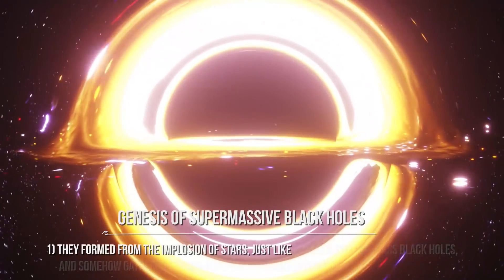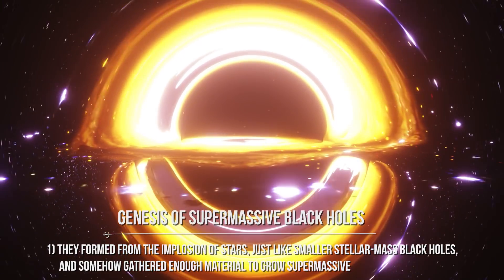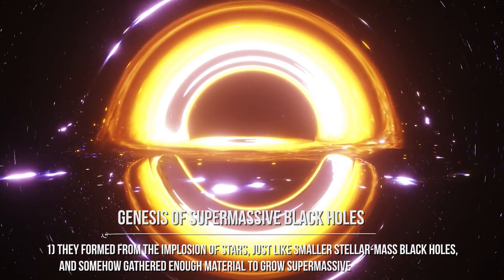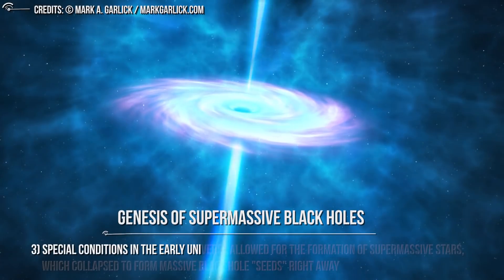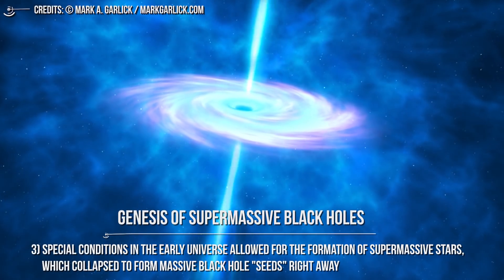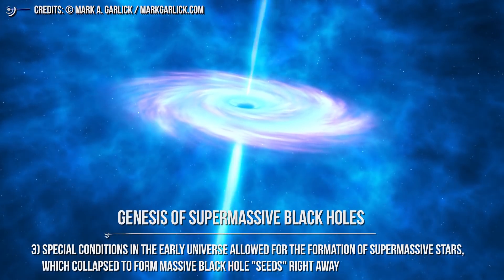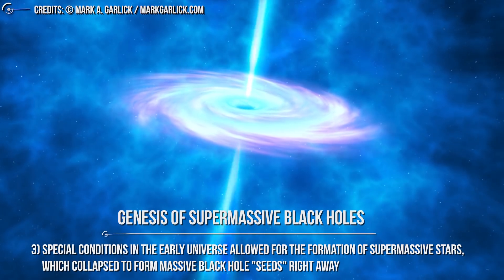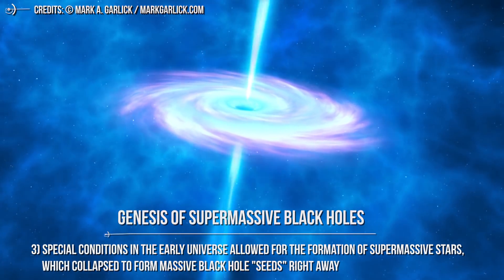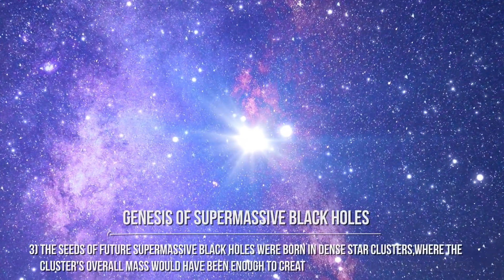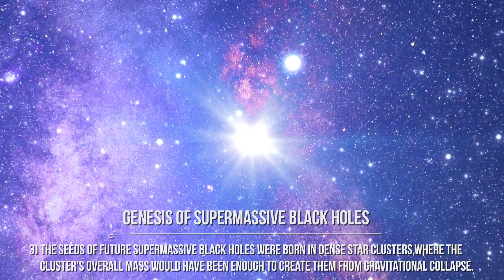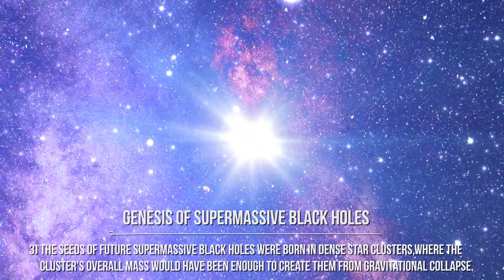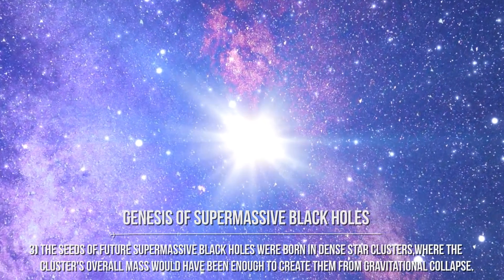One, they formed in the implosion of stars, just like smaller stellar mass black holes, and somehow gathered enough material to grow supermassive. Two, special conditions in the early universe allowed for the formation of supermassive stars, which collapsed to form massive black hole seeds right away. Or three, the seeds of future supermassive black holes were born in dense star clusters, where the cluster's overall mass would have been enough to create them from gravitational collapse.